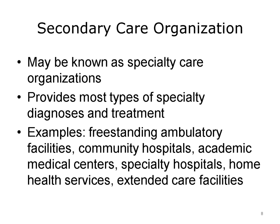Secondary care organizations represent more specialized care, also called specialty care organizations. They can provide many types of specialty care, such as surgery, cardiology, physical medicine, and burn care. Examples of secondary care providers include ambulatory care facilities such as outpatient surgery centers and freestanding ambulatory or rehabilitative facilities; community hospitals and academic hospitals; specialty hospitals such as cancer-focused hospitals; home care and hospice services; and extended care facilities such as nursing homes and skilled nursing facilities.